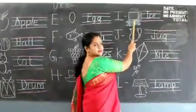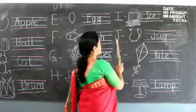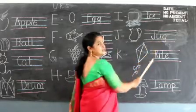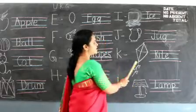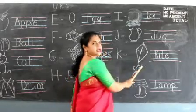I for Ice. I, C, E, Ice. J for Jug. J, U, G, Jug. K for Kite. K, I, T, E, Kite.